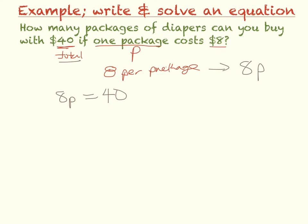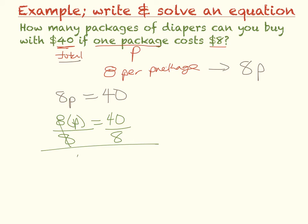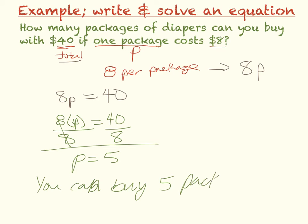So 8P equals $40. And when I solve, we think of that as 8P equals $40, so we have to divide by 8 on both sides. 40 divided by 8 gives P equals 5. So that means that you can buy 5 packages. And that is your final answer.